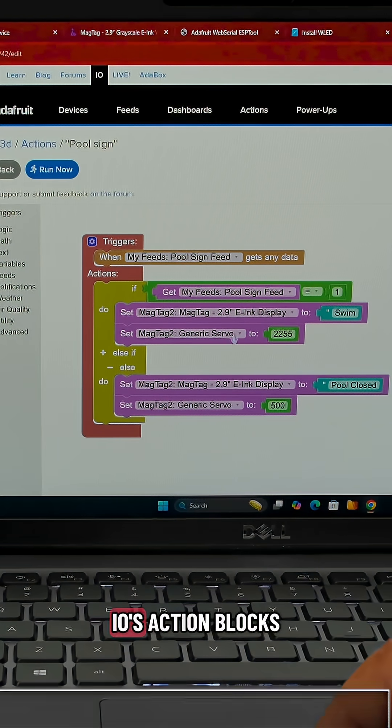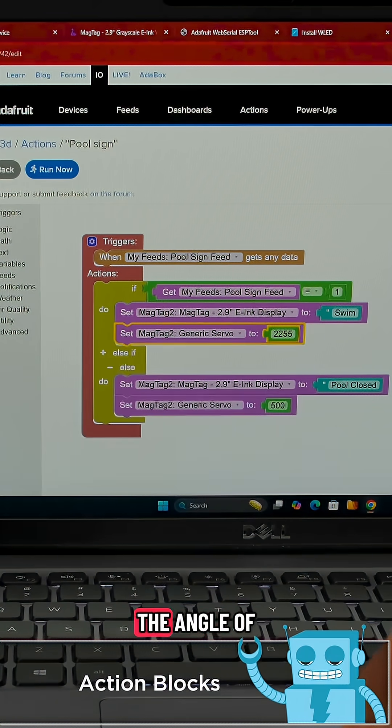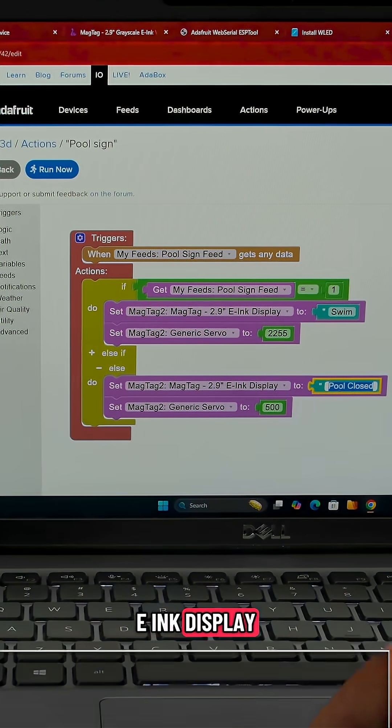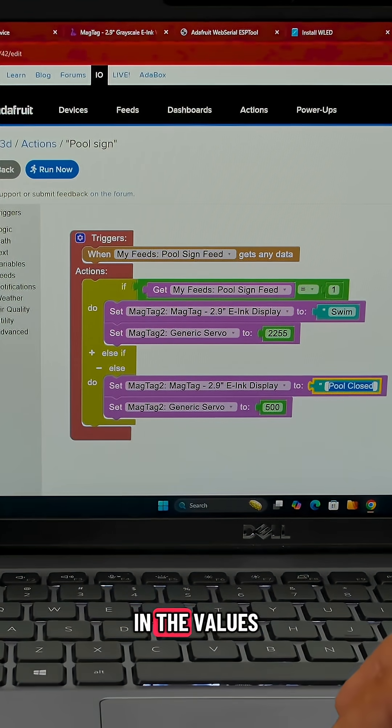You'll use Adafruit IO's action blocks to create a workflow that will set the angle of the servo and display a custom message on the MagTag's e-ink display whenever the feed detects a change in the values.